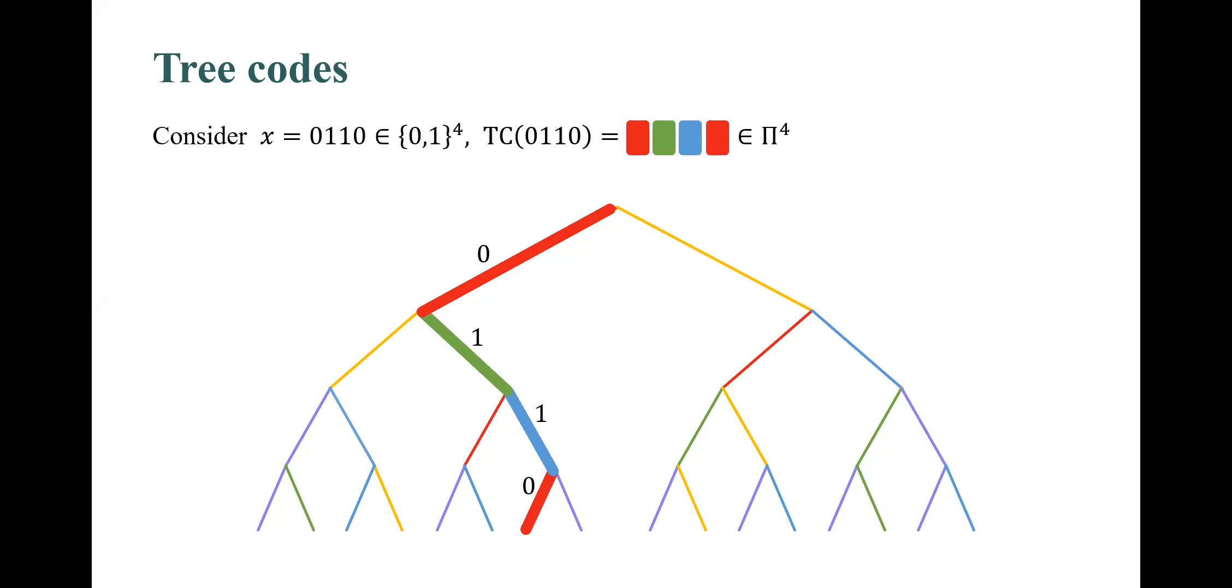For example, if we take n to be 4 and the message x to be 0110, then x encodes the unique path from the root to a leaf, which is represented here by the bolded path. The encoding of a message is the sequence of colors we get from following this path. So here, the encoding of x is red, green, blue, red.